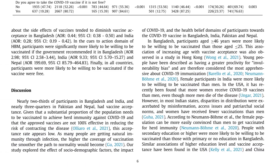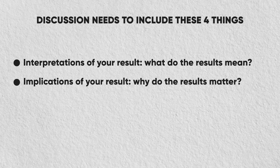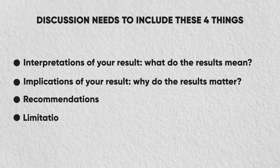After results, the next section is discussion. Discussion is about the interpretation of your results — what is the implication of your result. You need to remember four things while writing the discussion: how you interpret your result, what the implications are (i.e., the importance of your result), what recommendations you can make for future research, and what the limitations of your research are — for example, if you could not conduct research in a certain way.